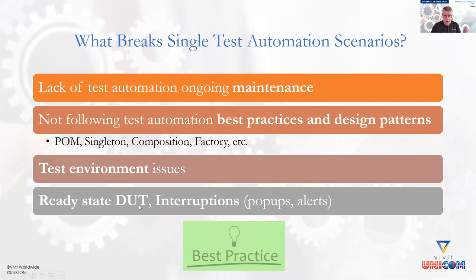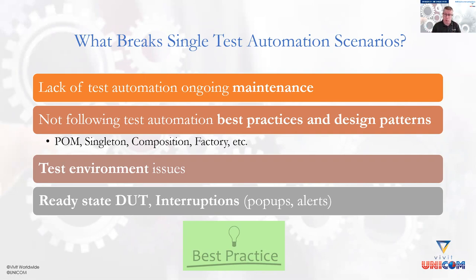Test environment issues on mobile or web: even if you set up a test environment with a set of mobile devices or browsers, if you are not updating and maintaining them, your test cases will fail or produce irrelevant results. Ready state is another key issue — your device under test needs to handle pop-ups, security alerts, and interruptions. If it's not in ready state, your test automation isn't reliable, and it will eventually result in waste, failures, and escape defects.